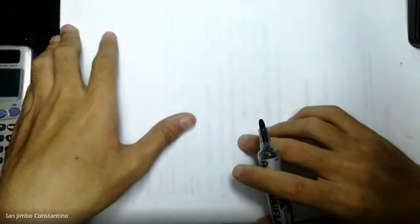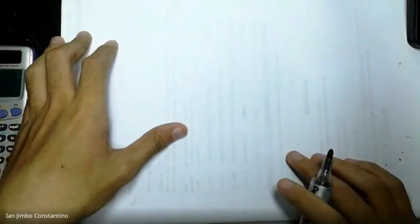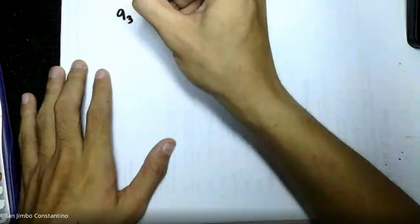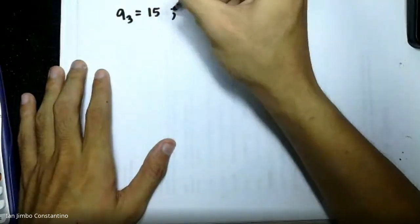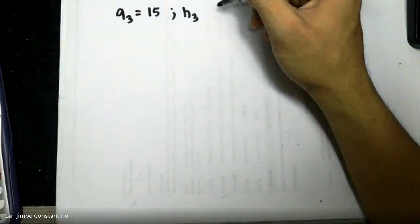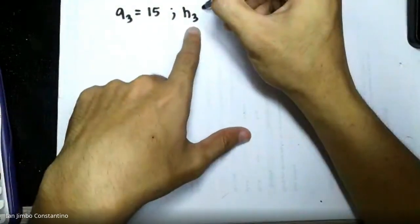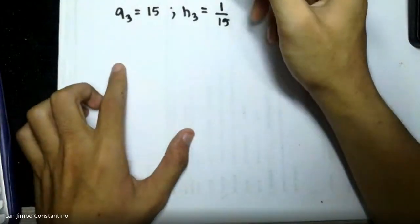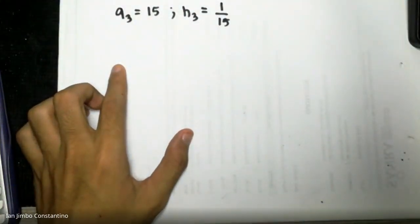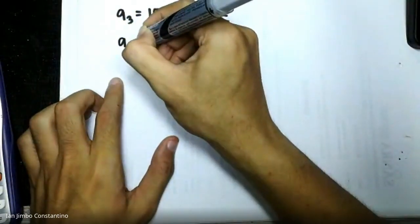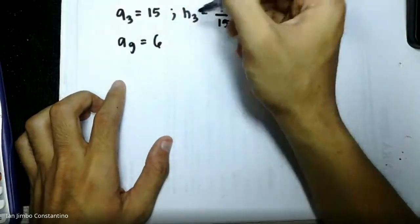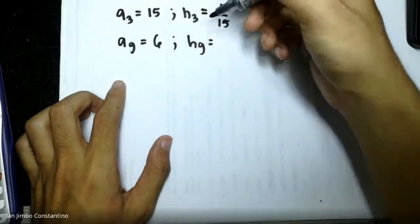Number 25: the third term of a harmonic progression is 15, and the ninth term is 6. Find the 11th term. The third term H3 = 15, so in arithmetic terms, A3 = 1/15. The ninth term H9 = 6, so A9 = 1/6 in arithmetic terms.